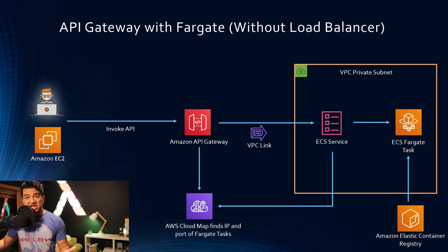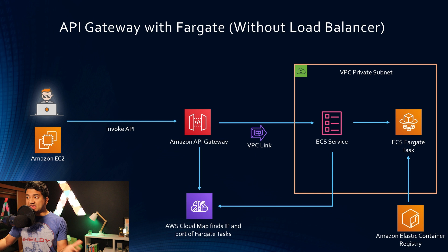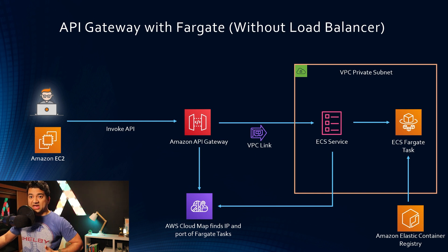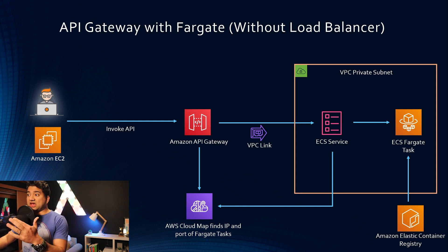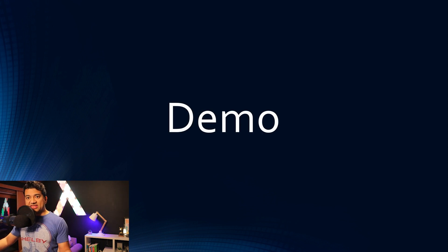The reInvent change is that Amplify did not used to support Fargate before. You could deploy a Lambda and API Gateway with Amplify, but you could not do Fargate with API Gateway with Amplify before. Now, with this reInvent announcement, you can do that. Let's jump in and do a demo to see how it works in action.